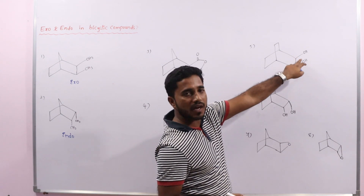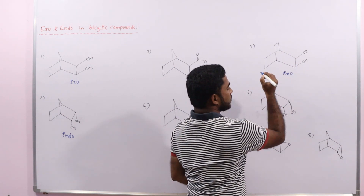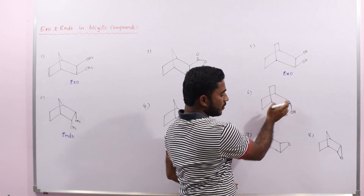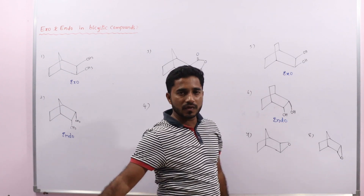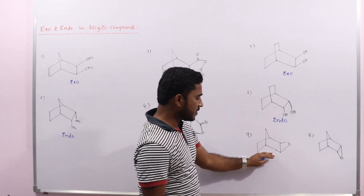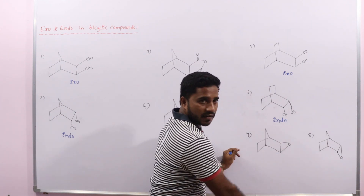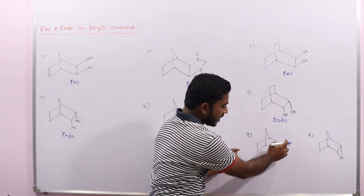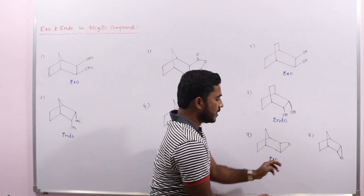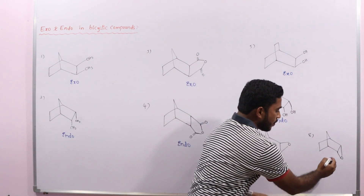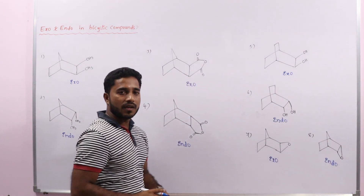Here, ring and groups are on the same side, so it is exo. Here, ring and groups are opposite, so it is endo. In this case, the ring and the epoxide ring are on the same side — that's why it is exo. Here, the ring and epoxide ring are opposite — that's why it is endo.